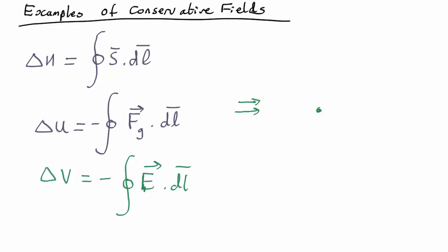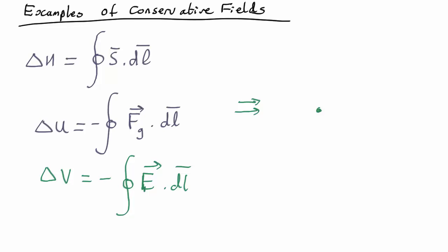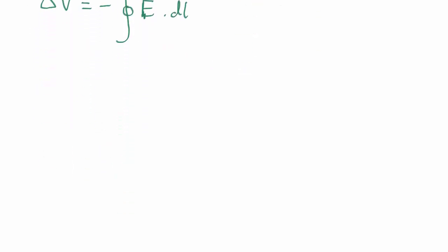Those are conservative fields. Are there fields that are not conservative? Well, there sure are. One example would be the vector field of the wind in a hurricane or a cyclone or a tornado, depending which country you are in. Now, if you do a line around like this, you can see that the dl's and the vectors of fluid flow are in the same direction all the way around, so the integral of the fluid flow dot dl is most certainly not zero.